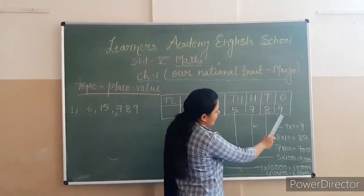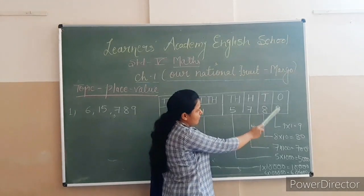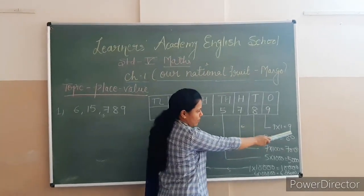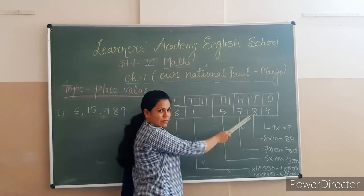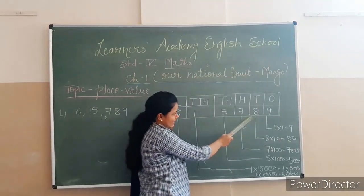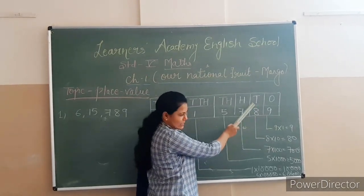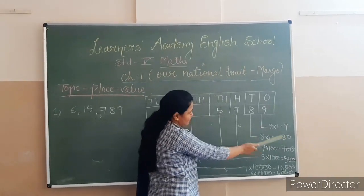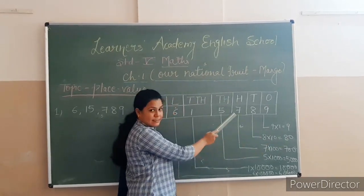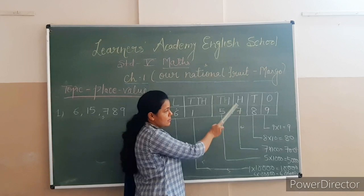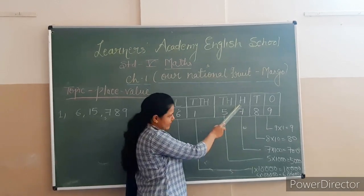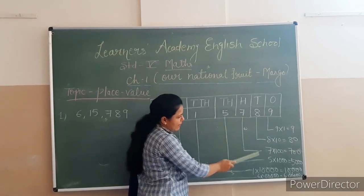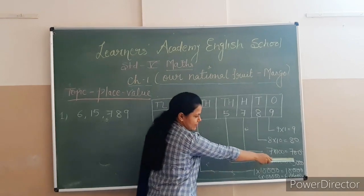So, 9 is in the position of the 1s, so it will be multiplied by 1, giving 9. The next number is 8, and it is in the position of the 10s, so 8 multiplied by 10 equals 80. And the next position is 7, in the position of the 100s, so 7 multiplied by 100 equals 700.